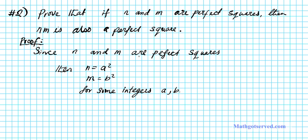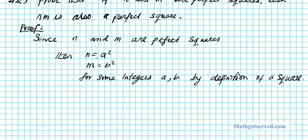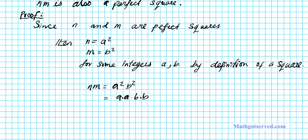Since n and m are perfect squares, then n is equal to a squared and m is equal to b squared for some integers a and b, by definition of a perfect square. So nm is simply going to be a squared times b squared. And then we can write this as a times a times b times b, using the properties of exponents.